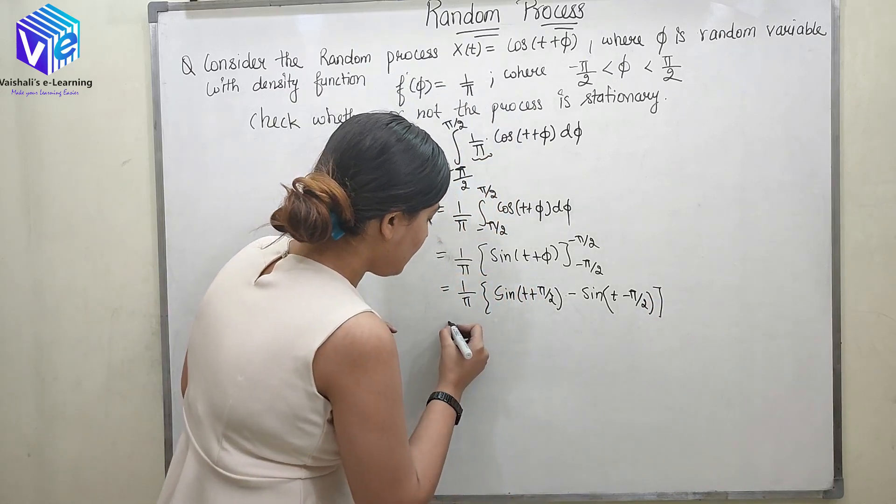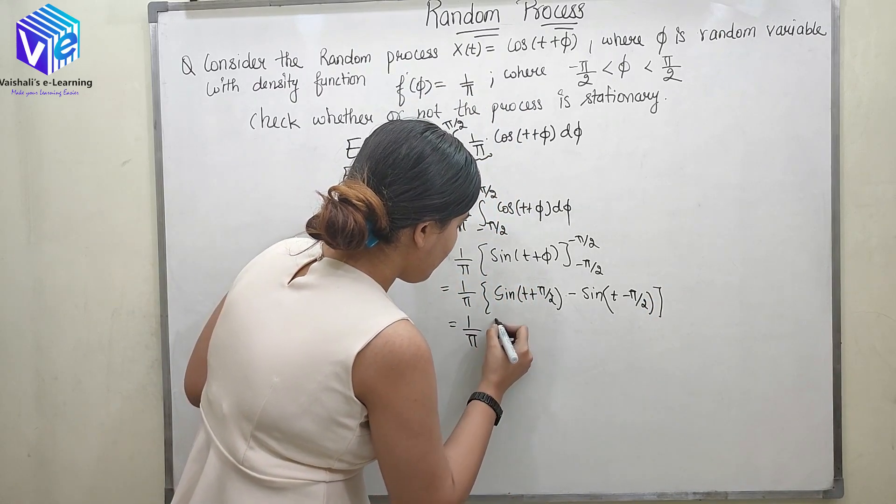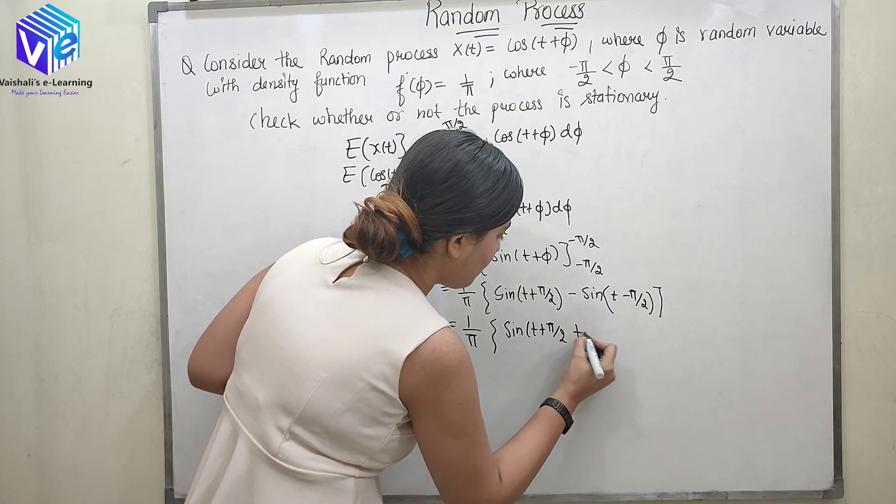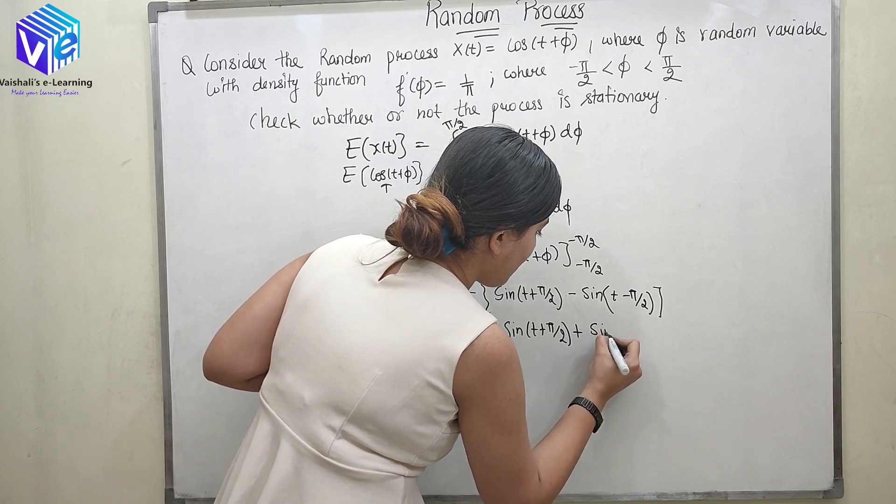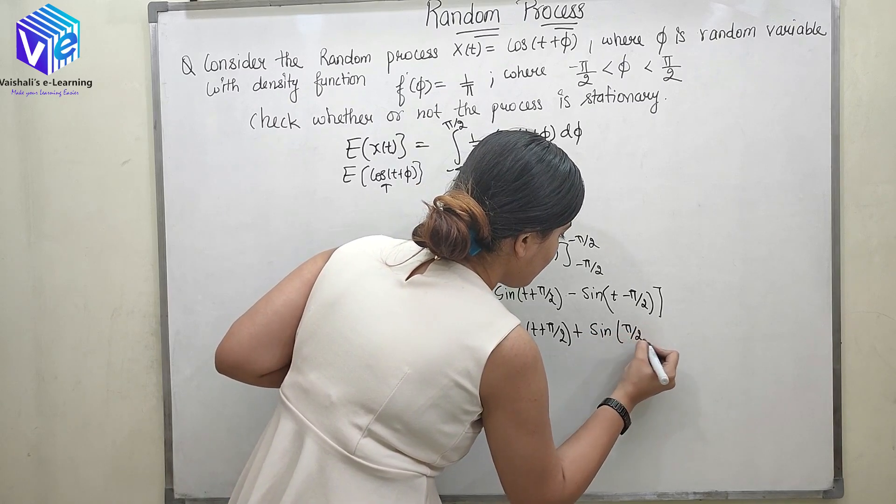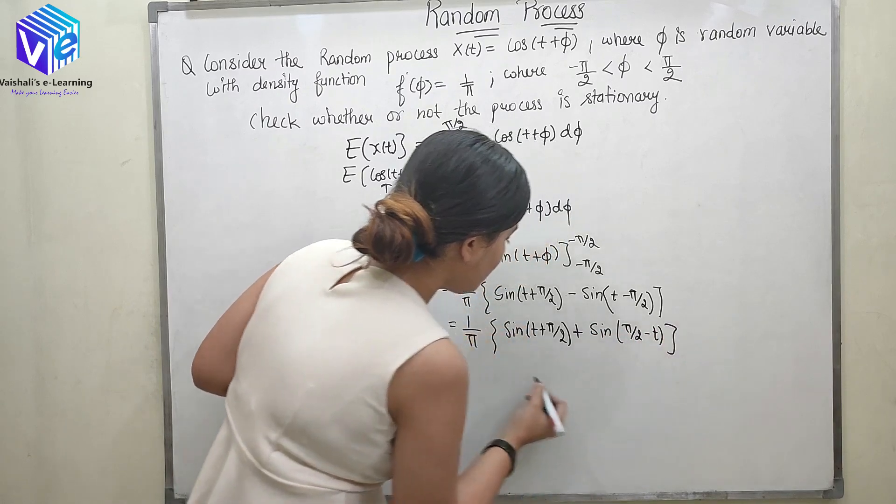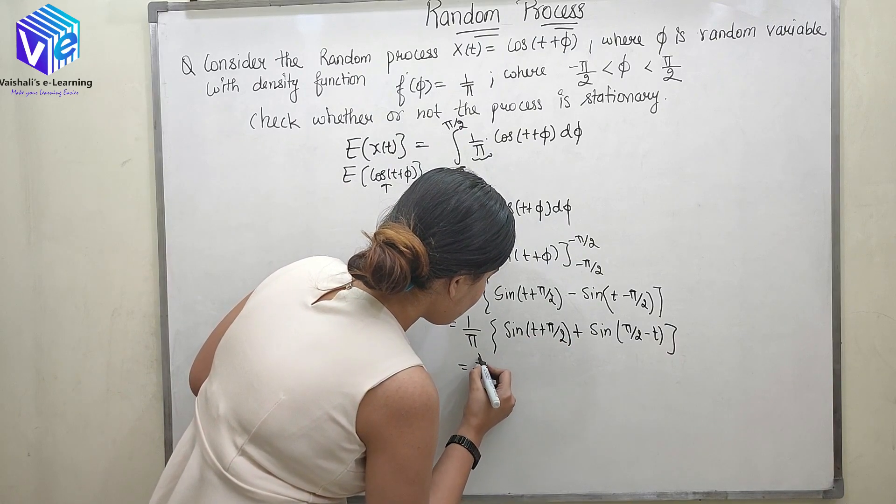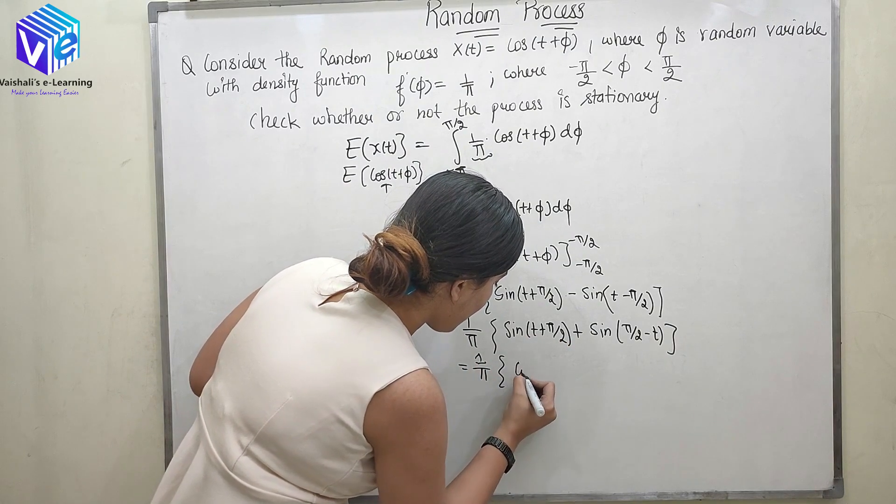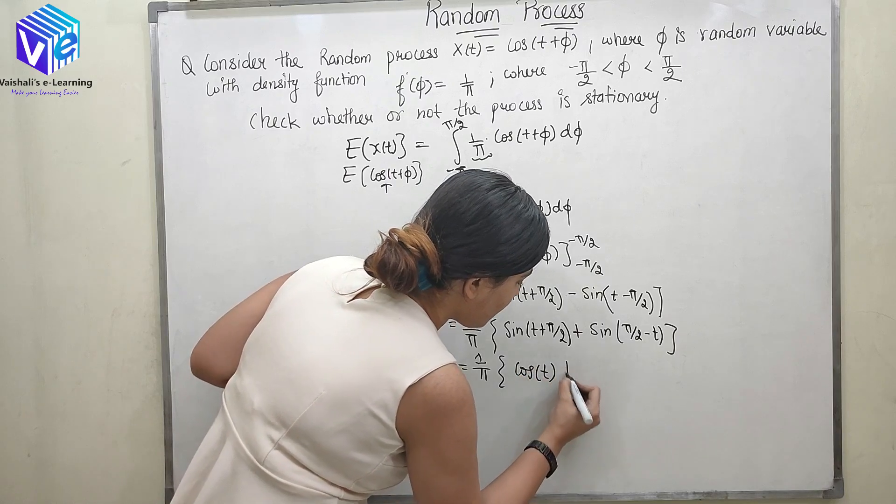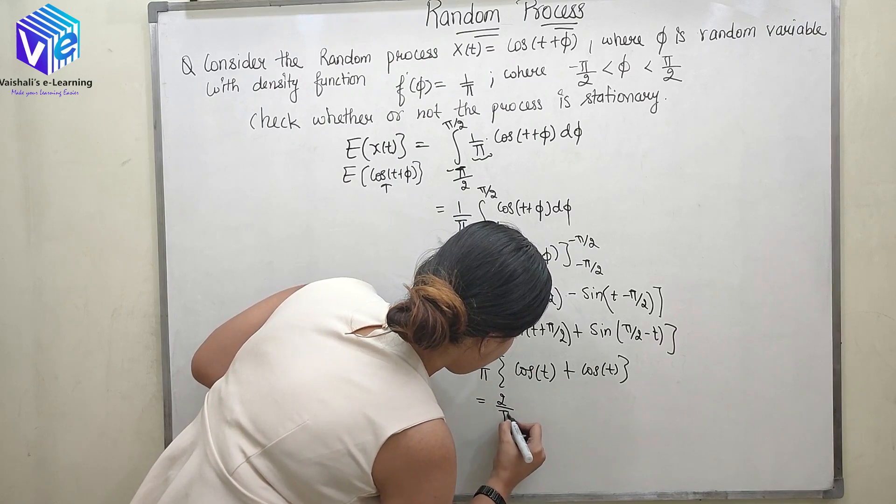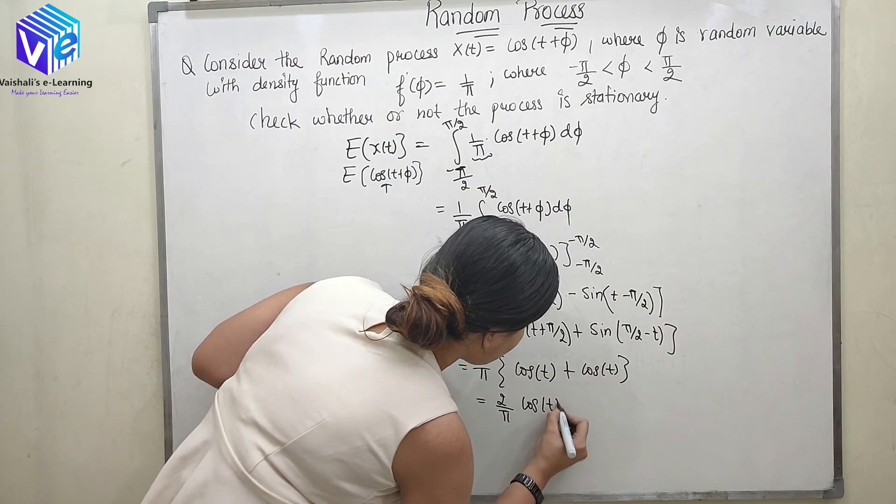Now I can write it like 1/π cos(t). So now it is 2/π cos(t).